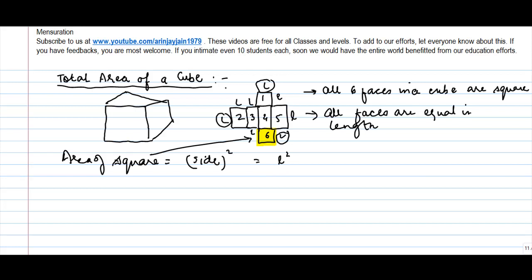Also, the total area of the cube will be what? It will be area of square one, plus area of square two, plus area of square three.